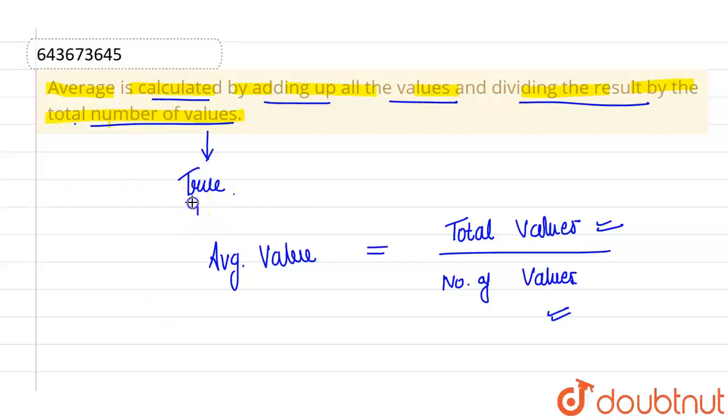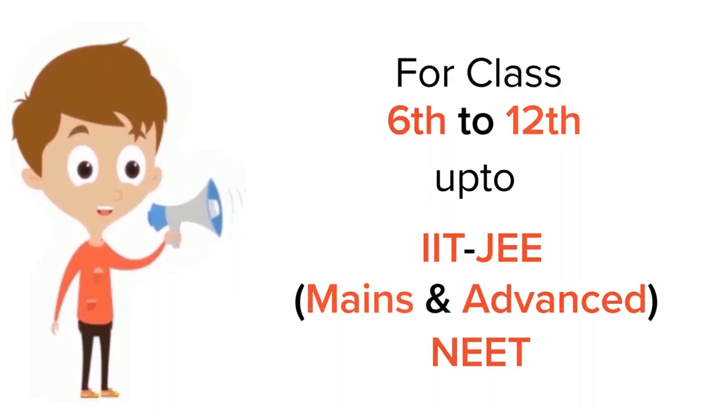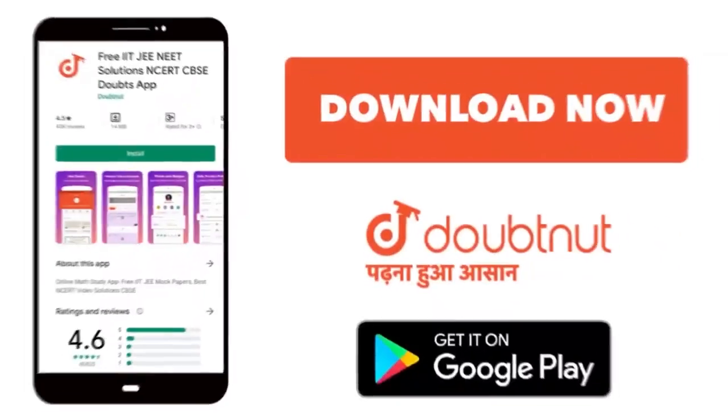And the given statement is correct. Okay, I hope you understood. Thank you. For class 6 to 12, IIT-JEE and NEET level, trusted by more than 5 crore students. Download Doubtnet app today.